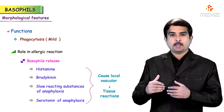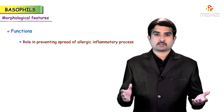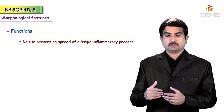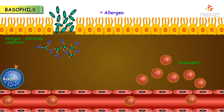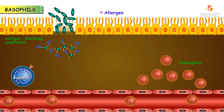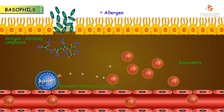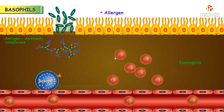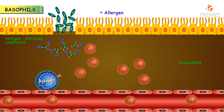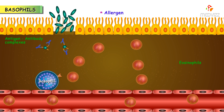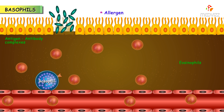These substances in turn cause local vascular and tissue reactions that cause many allergic manifestations. Basophils also play an important role in preventing the spread of allergic inflammatory process, because the basophils release eosinophilic chemotactic factor. This factor causes eosinophils to migrate towards the inflamed allergic tissue, where they phagocytose and destroy antigen-antibody complexes and prevent the spread of the local inflammatory process.